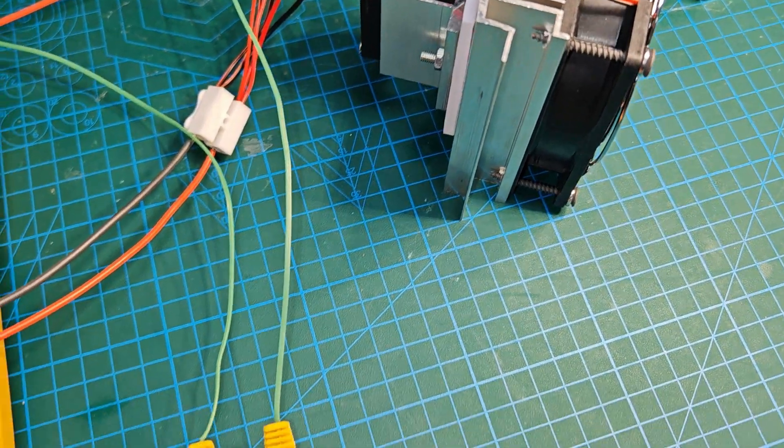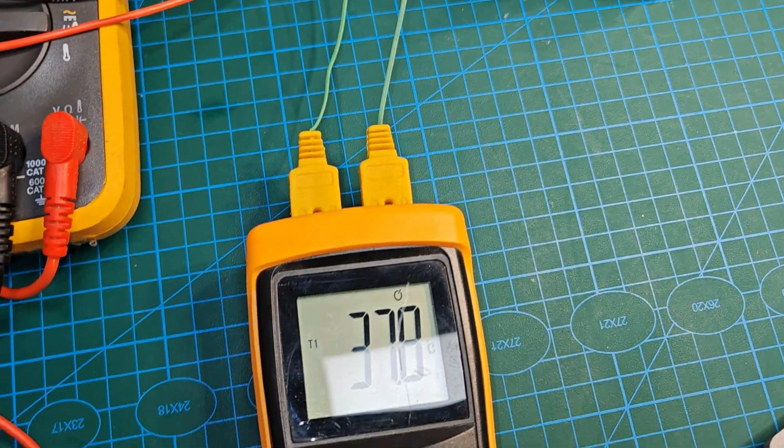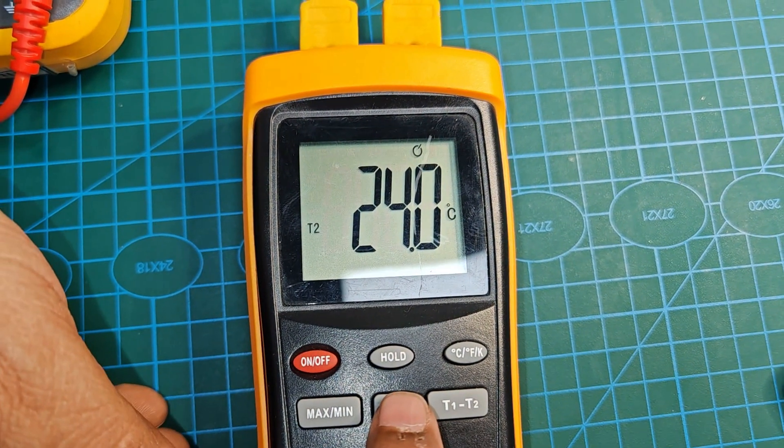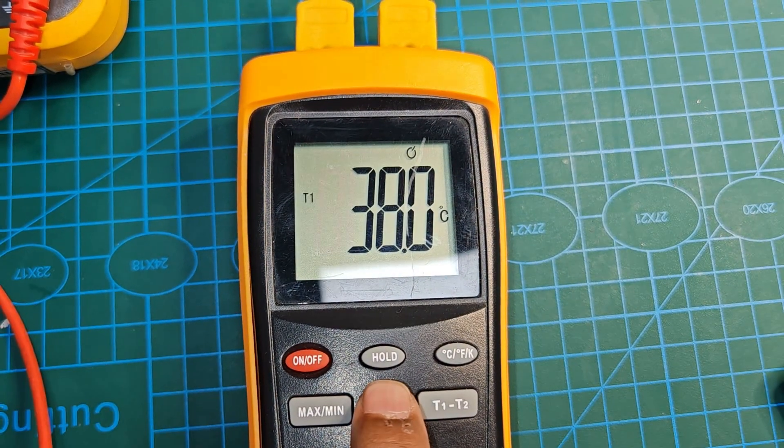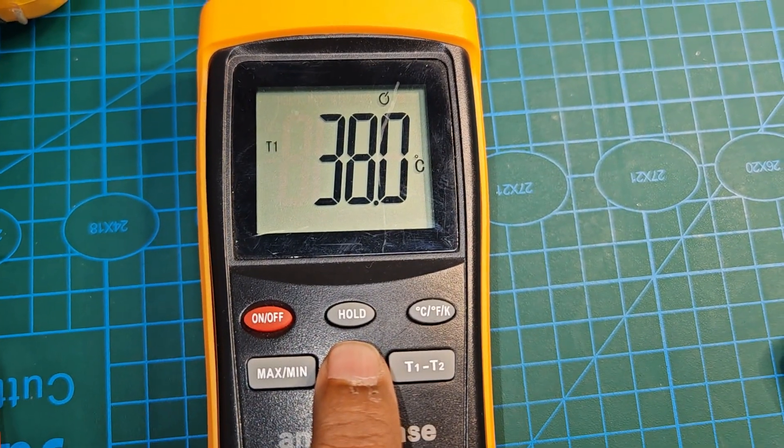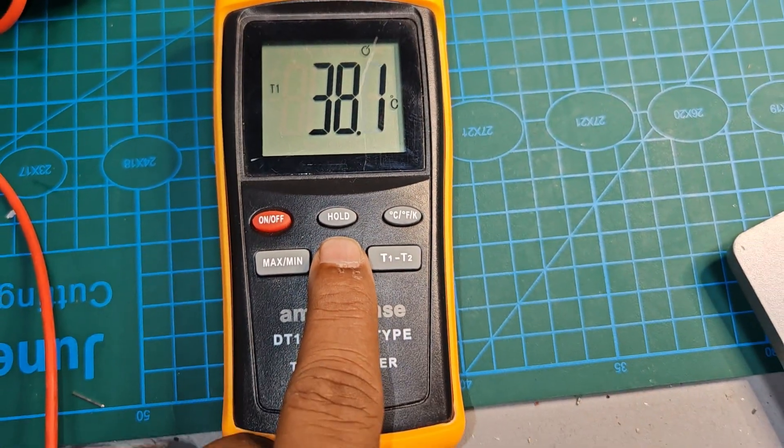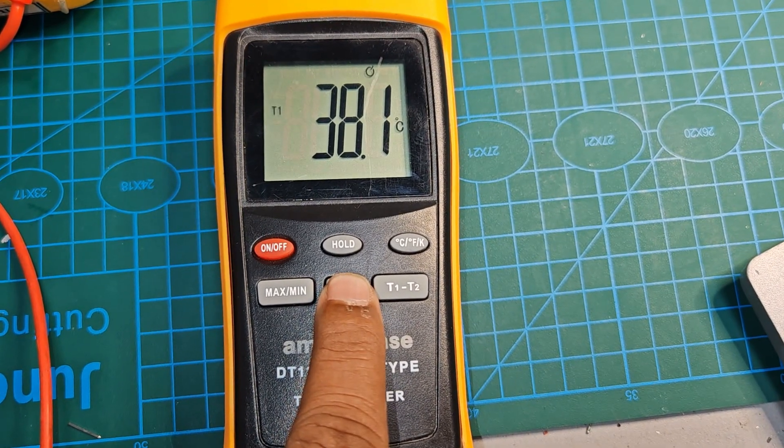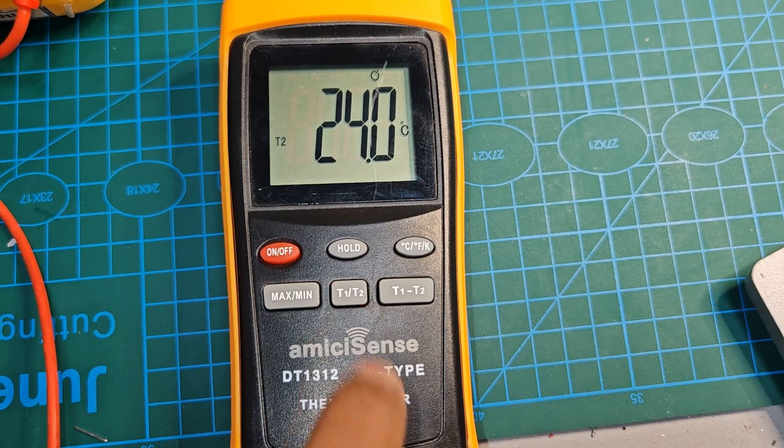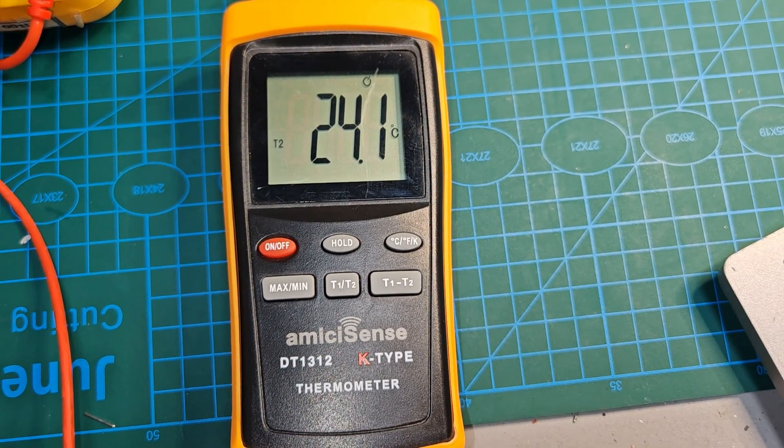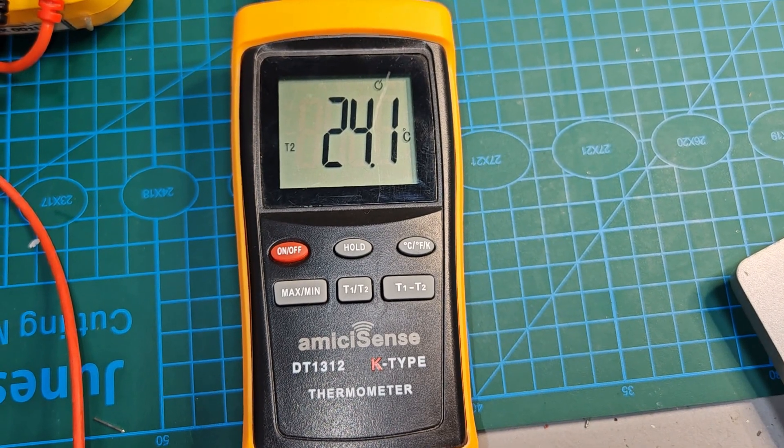So one side is 24 degree Celsius and other side is 38 degree Celsius. You can see the difference. One side is 38 degree Celsius and other side it is getting dropped to 24 degree Celsius. This is the Peltier effect, my dear friends. One side of the Peltier is releasing the heat and other side is absorbing heat, means the temperature is getting lower.